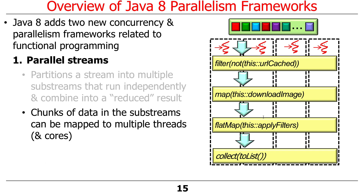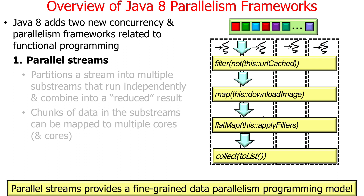Parallel streams leverage all the powerful fork-join pool framework mechanisms under the hood, providing a fine-grained data parallelism programming model that uses functional programming for computations. The behaviors passed into operations like filter, map, and flatMap are typically method references or lambda expressions implementing functional interfaces like Function, Consumer, Supplier, or Predicate.